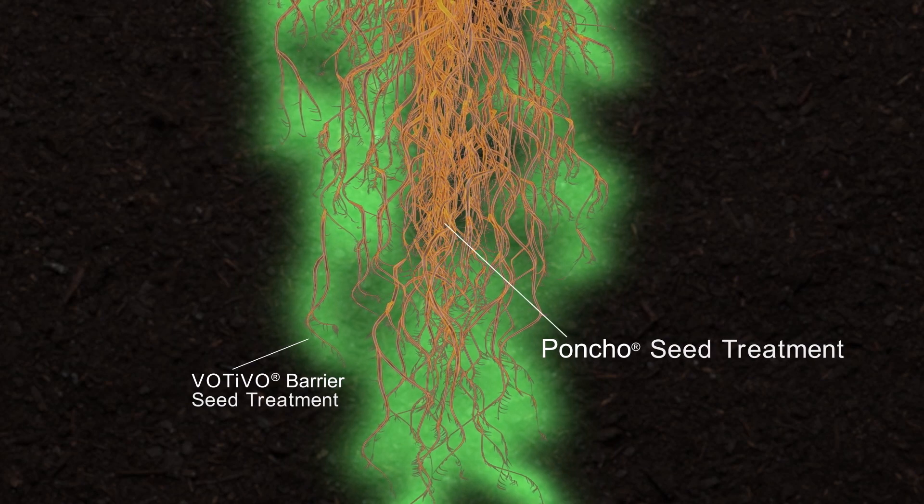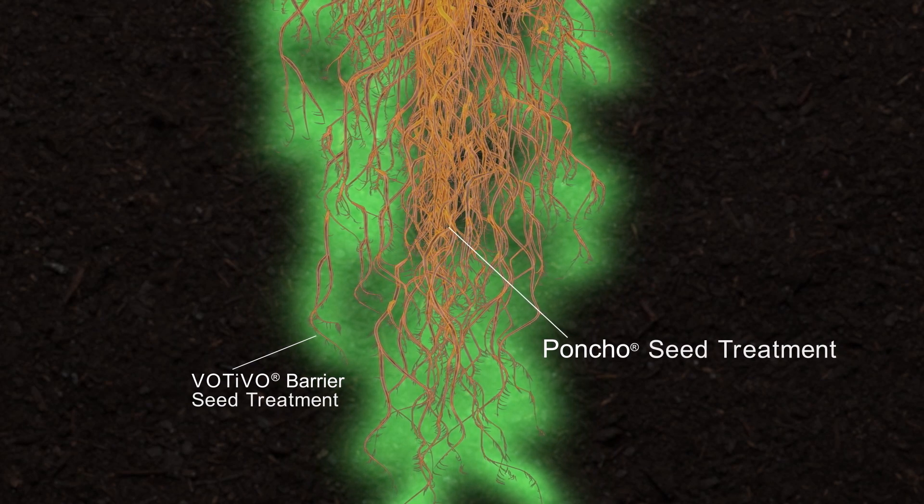Together, Poncho and Votivo deliver a healthy plant, critical to realizing the yield potential of corn.